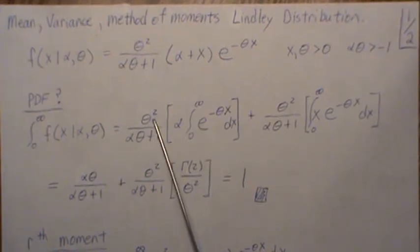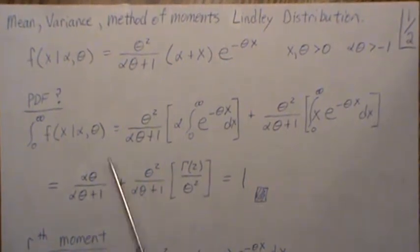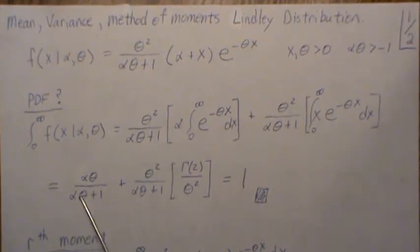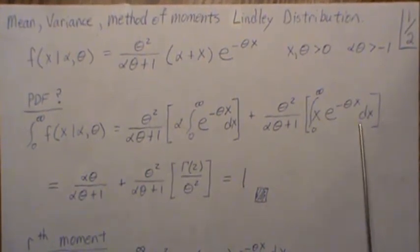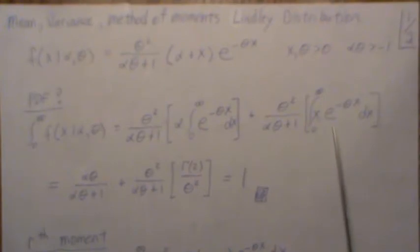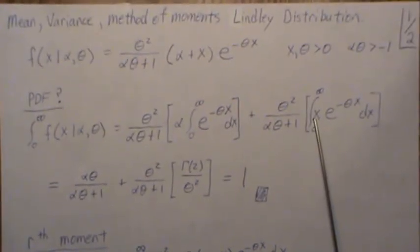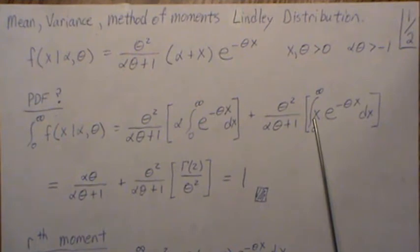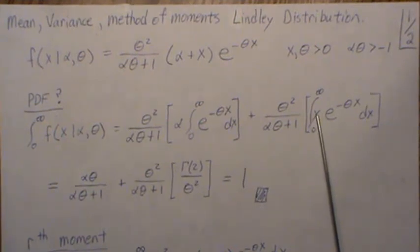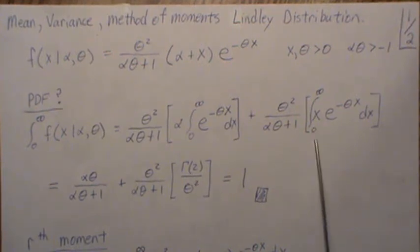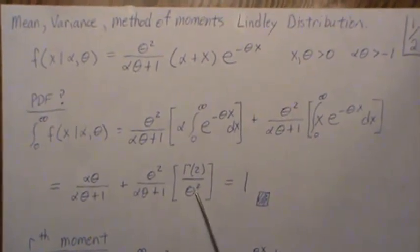Then one of the thetas cancels with that alpha, and that's what this is. Now this piece here is a gamma distribution. If the constants out front were theta squared over gamma two, then this would integrate to one.